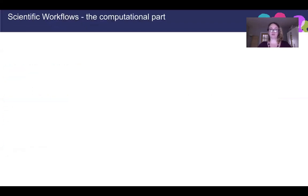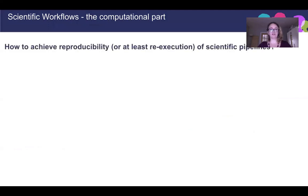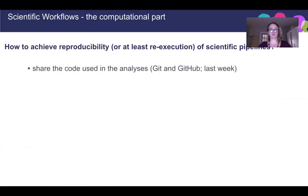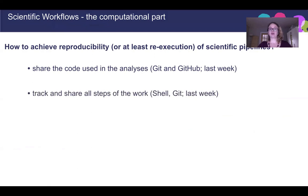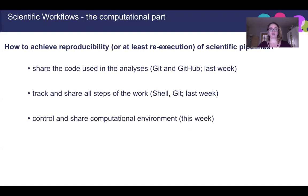We can also ask the question: how do we achieve reproducibility, or at least re-execution of scientific pipelines? Things we discussed last week include using shared accounts in the analysis and tracking and sharing all steps of the work. We discussed git and also share, which can be a great help. Lastly, we should control and share the computational environment, and that is what we will discuss this week.